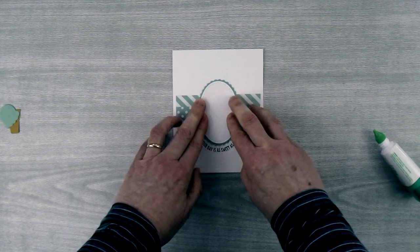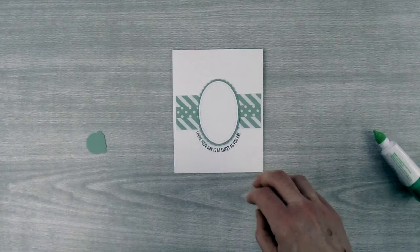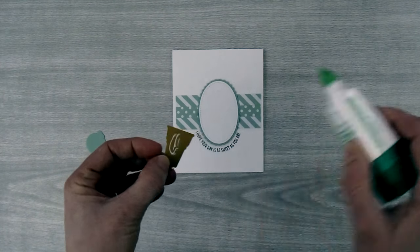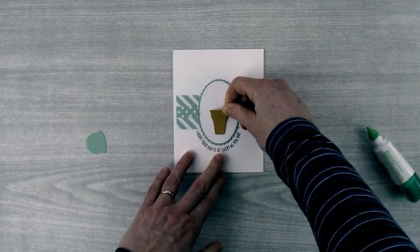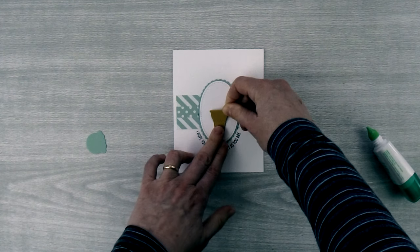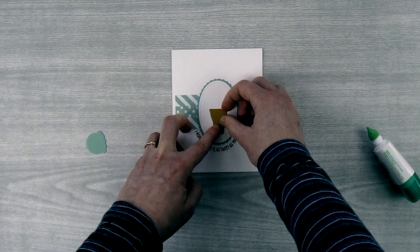Then I'm going to take my little cone, put some Tombow on the back of it and I'm just going to put it maybe half an inch from the bottom of the white oval.